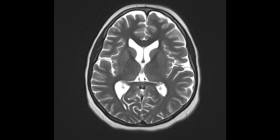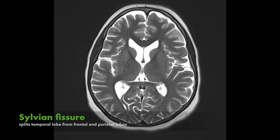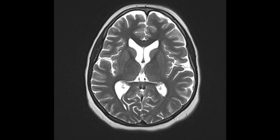Here we can see a fissure called the Sylvian fissure, which separates the temporal lobe inferiorly from the frontal and parietal lobes superiorly.